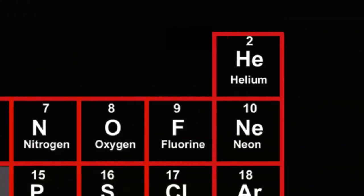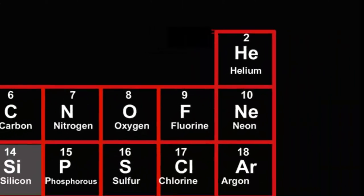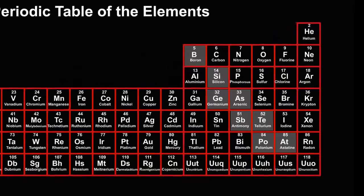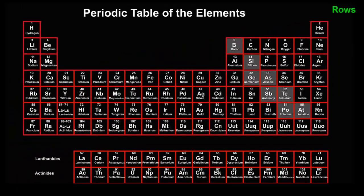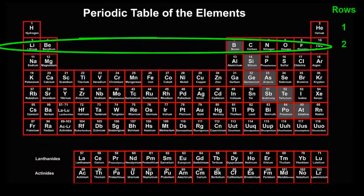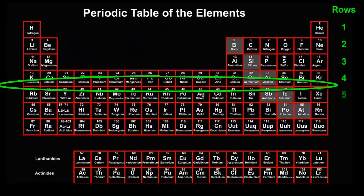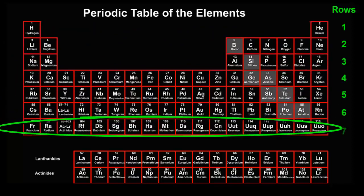This row goes up to atomic number 10 before another row is started. How many rows are there? 1, 2, 3, 4, 5, 6, 7.